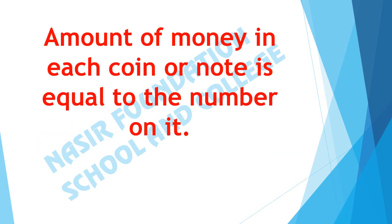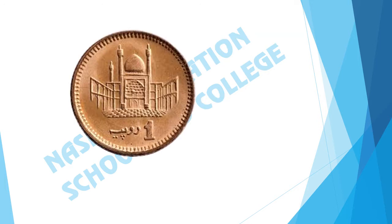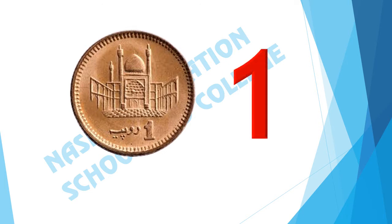The amount of money in each coin or note is equal to the number on it. What amount of money does this coin show? 1 is written on it, so it is a 1 rupee coin.